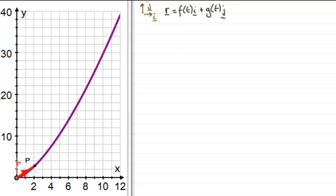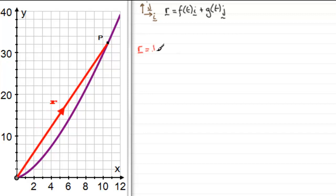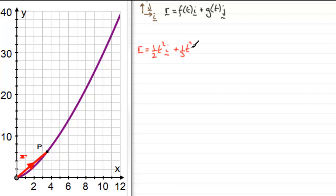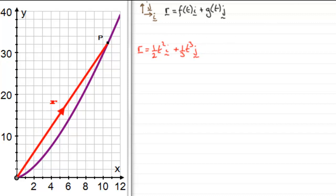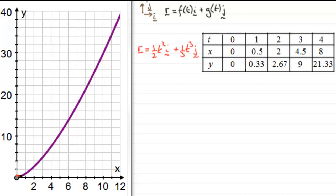For instance, the position vector r could be r equals one half t squared in the i direction plus one third t cubed in the j direction. By varying t we can build up a path for r, where t represents time. Taking values of t from 0 to 4, we can build up a table with those values.